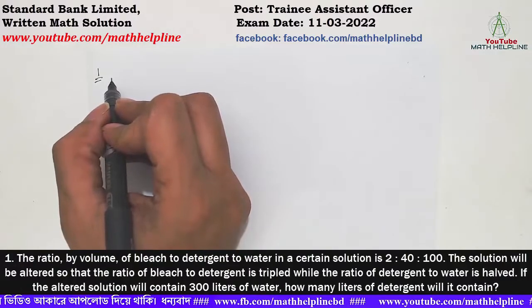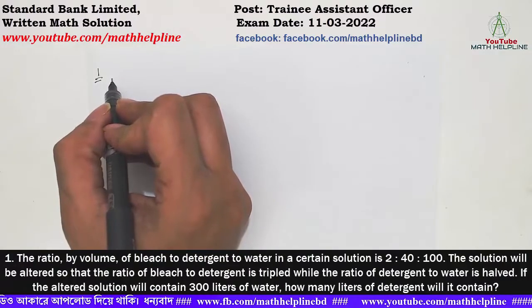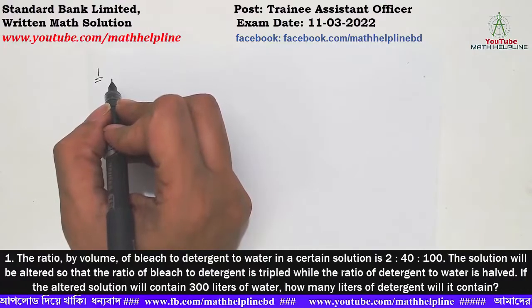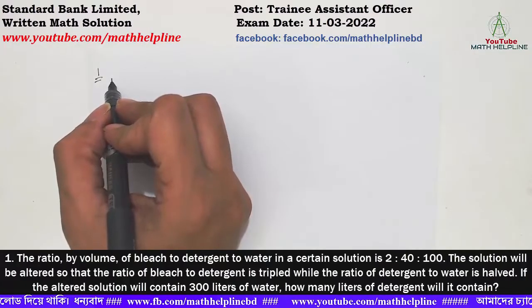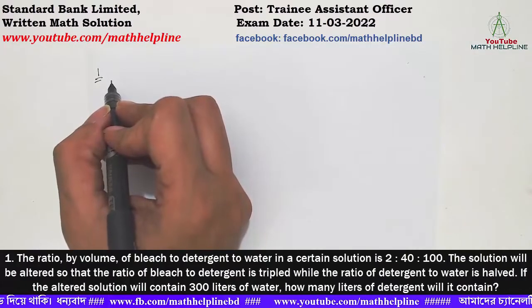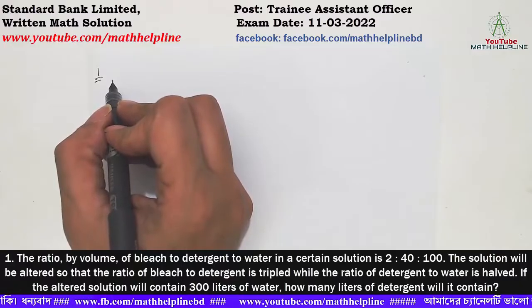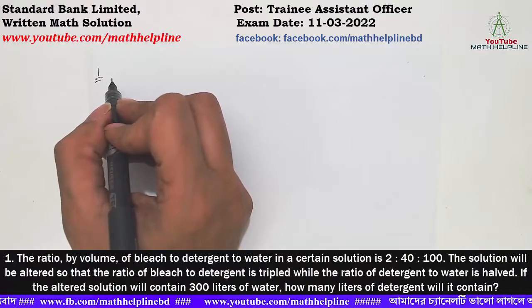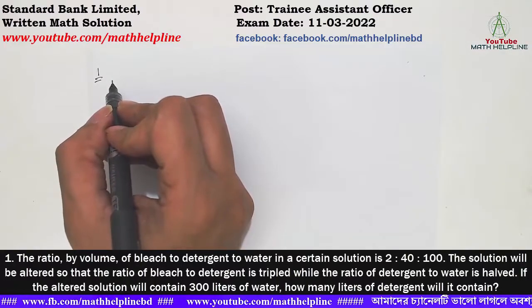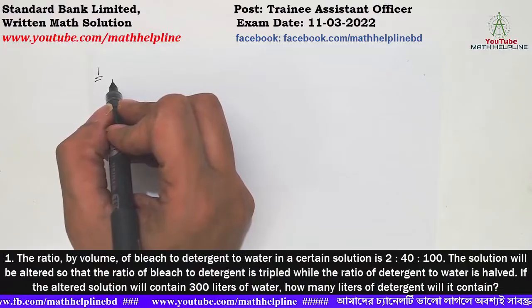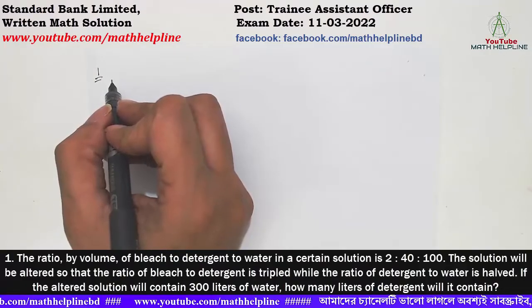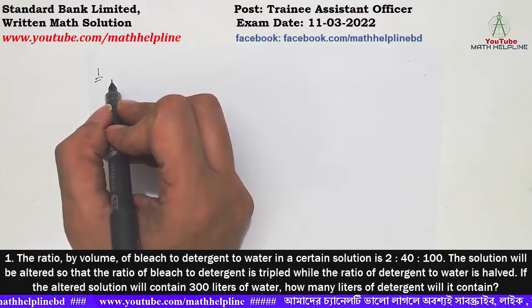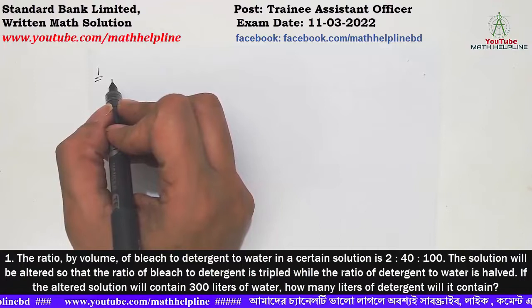Here, in a mixture, bleach, detergent, and water — three components — have a ratio of 2 to 40 to 100. Now the ratios will be changed: the ratio of bleach to detergent will be tripled, and the ratio of detergent to water will also be changed.